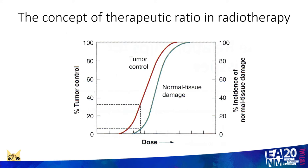The amount of normal tissue toxicity that one is prepared to accept depends upon the setting in which the radiation is being given. One is very concerned about significant late normal tissue toxicity in patients being treated with curative intent, but in patients receiving palliative treatments where lifespan may only be measured in months, there is less concern about using radiation that might lead to significant late normal tissue effects. I'll come back to this a little later in the talk.